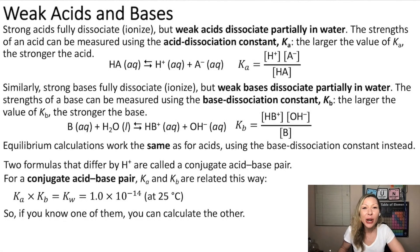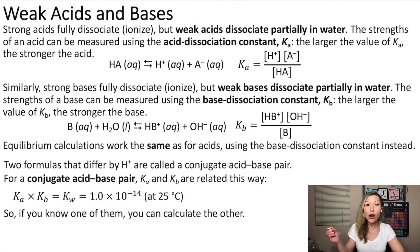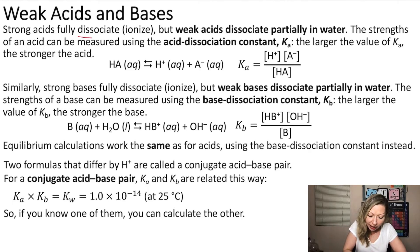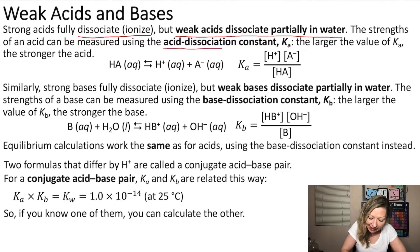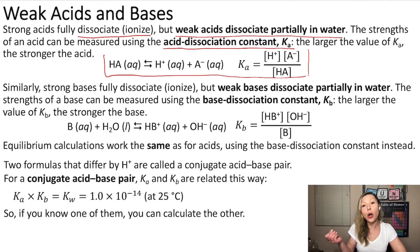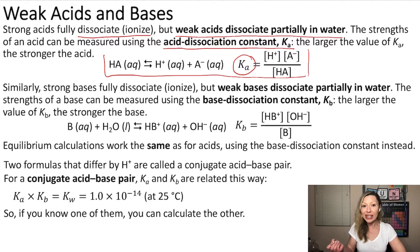Hello, guys. In previous videos, we talked a lot about weak acids, and we learned that strong acids dissociate fully in water. However, weak acids dissociate only partially in water. And the strength of an acid can be measured using the acid dissociation constant, or K sub A. The larger the value of K sub A, the stronger the acid.